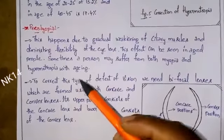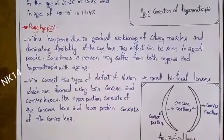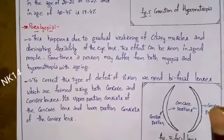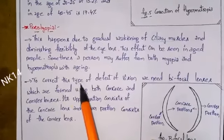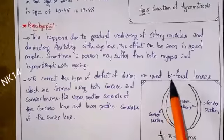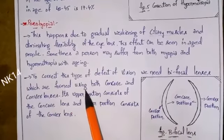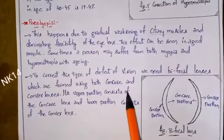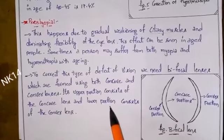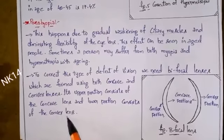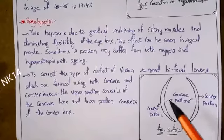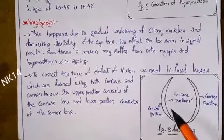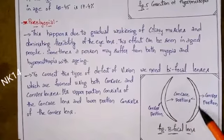To correct presbyopia, we use bifocal lenses, which are made using both a concave lens and a convex lens. The upper portion consists of a concave lens and the lower portion consists of a convex lens. With the use of these bifocal lenses we can rectify presbyopia.